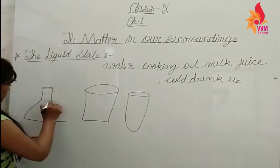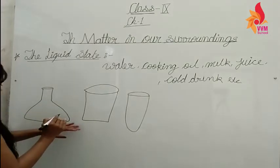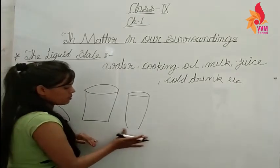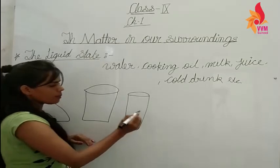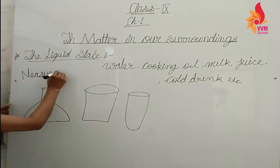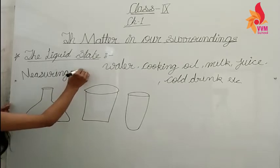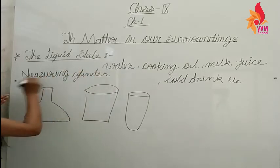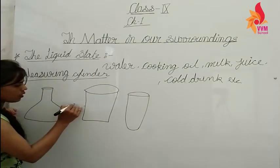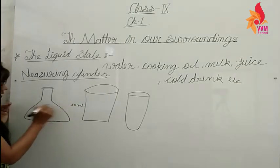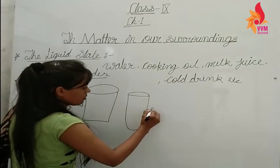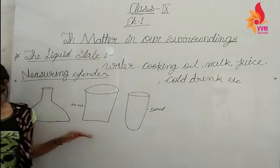We will use three different shaped containers — a beaker and a measuring cylinder. We will measure 50 ml of each substance.